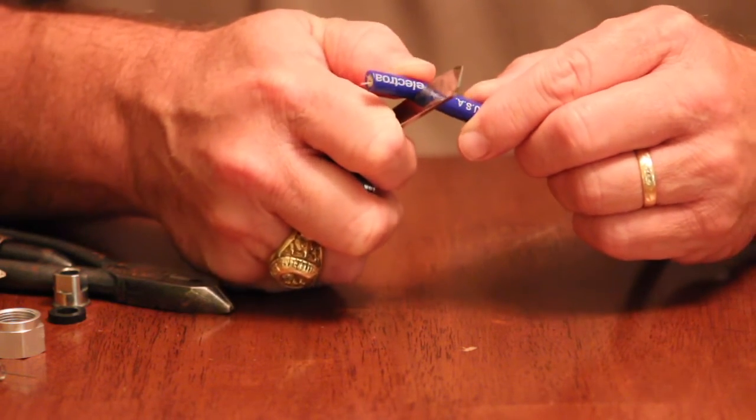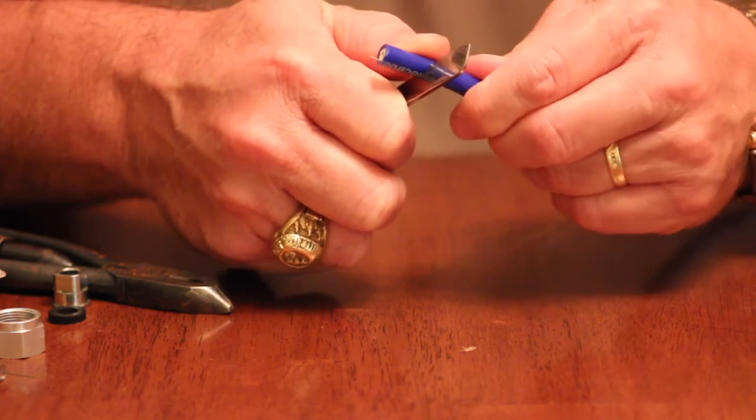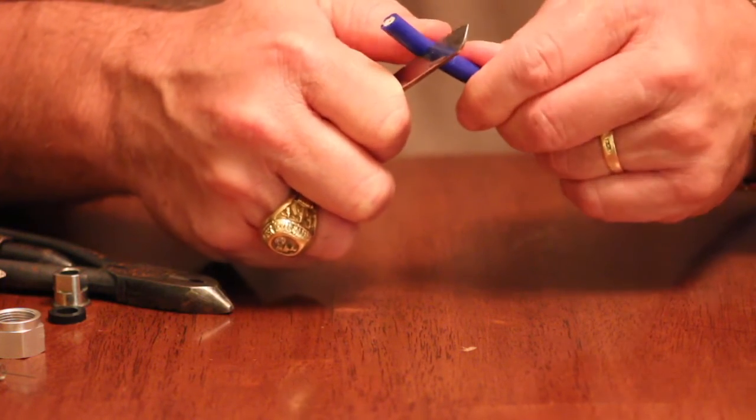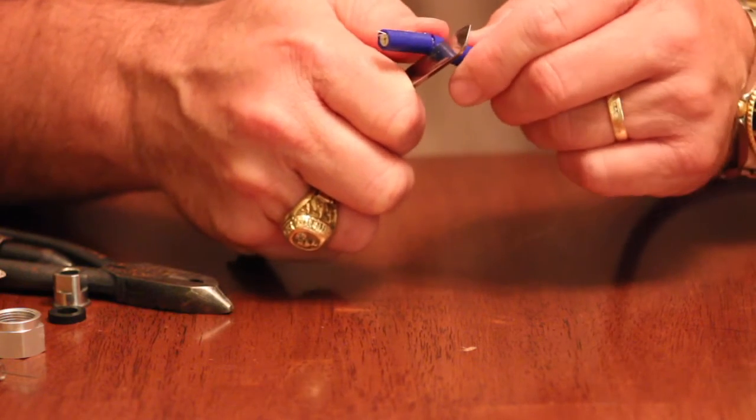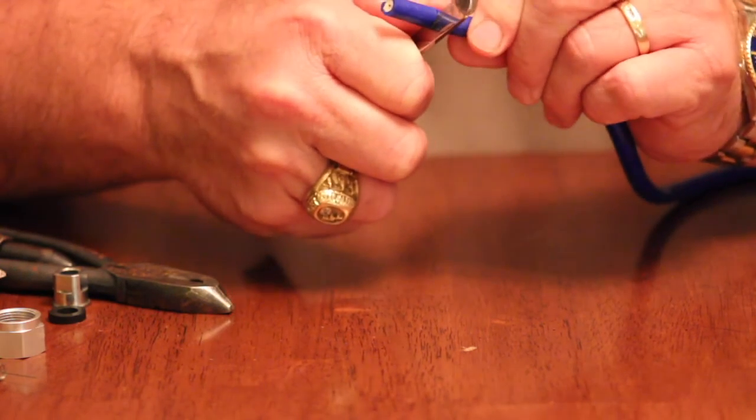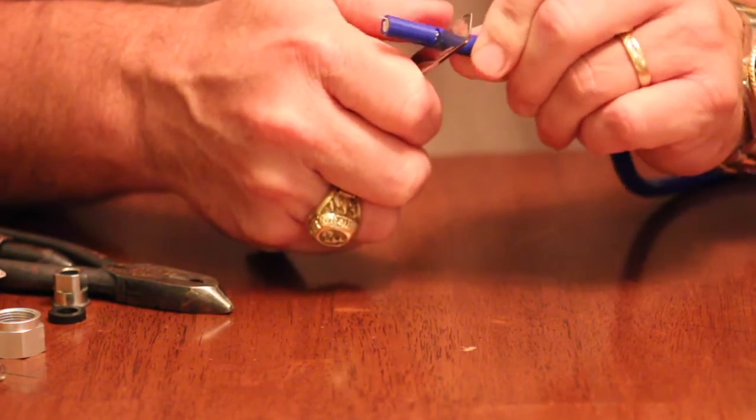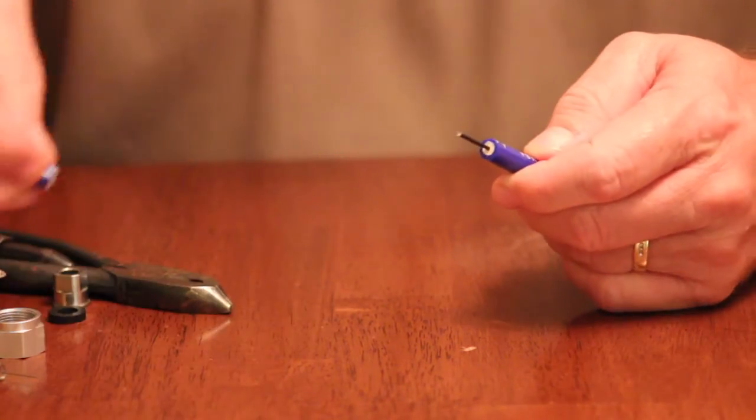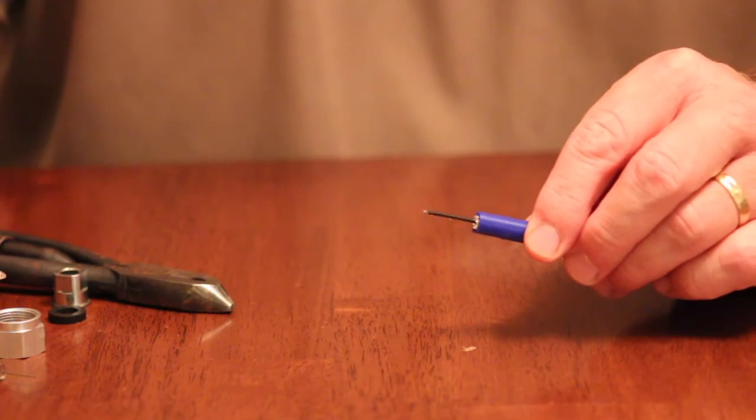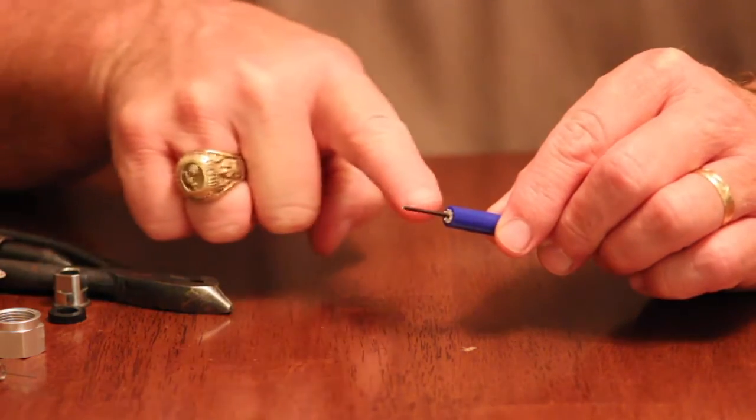You're going to slowly but surely work your way around this wire. You don't want to be real aggressive with this. That's why you want something sharp. Once it lets go, you're going to know it, and it's just going to pull right off. And there we have our central wire.